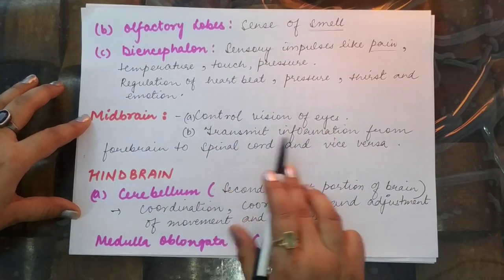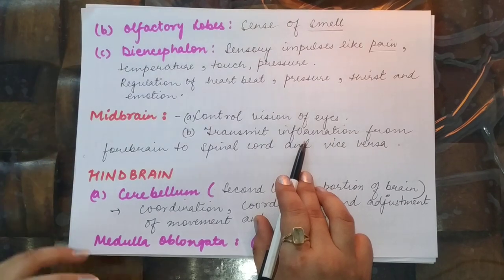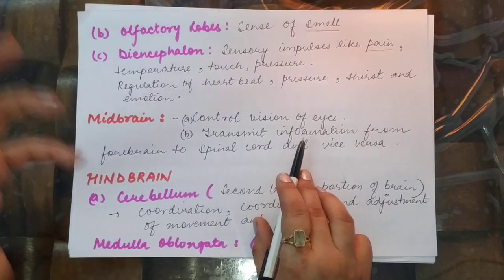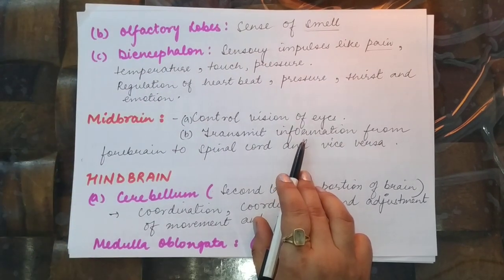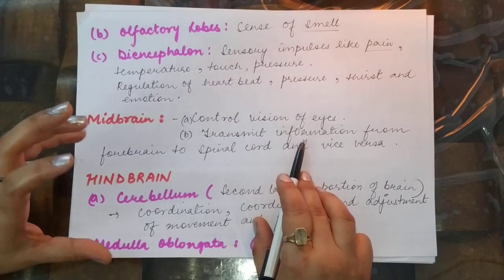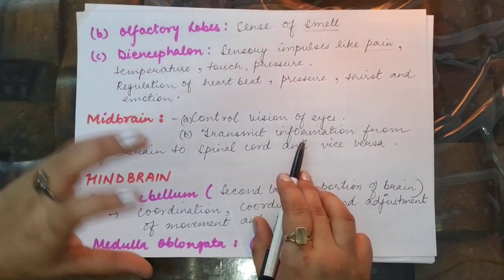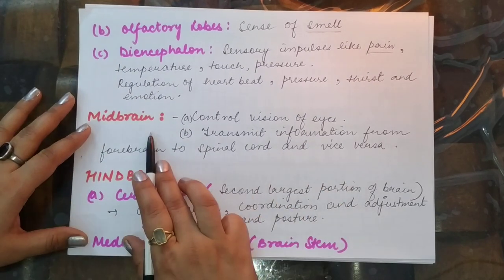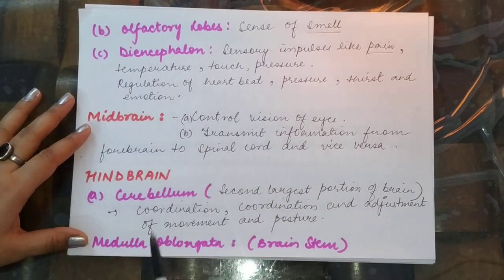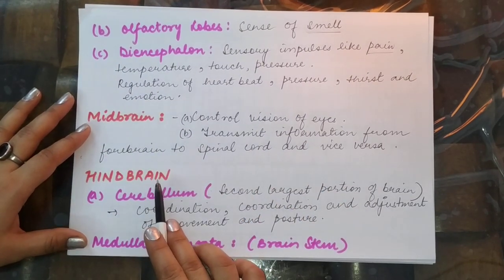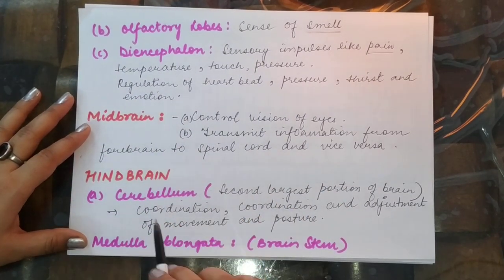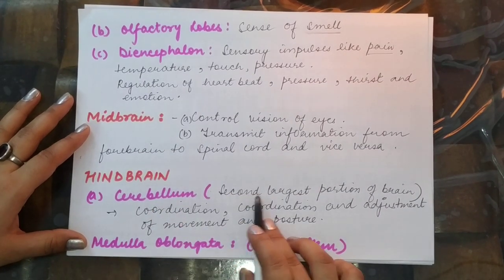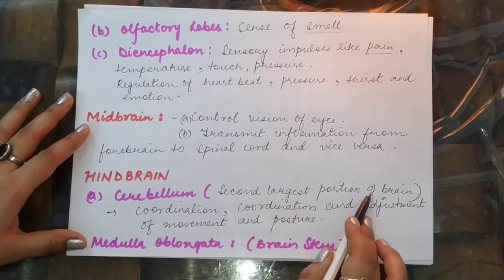The midbrain transmits information and acts as a junction between the forebrain and the spinal cord. Whatever information passes from the forebrain to the spinal cord or vice versa is done through the midbrain. The third part of the brain is the hindbrain, which consists of the cerebellum — the second largest portion of the brain after the cerebrum.